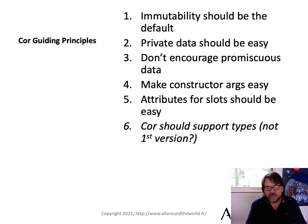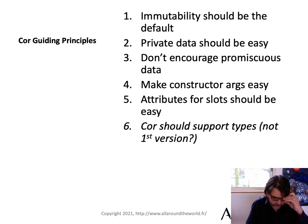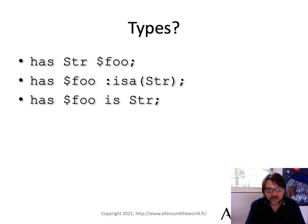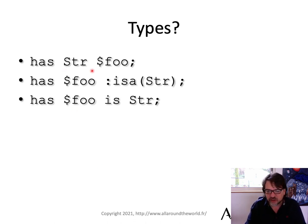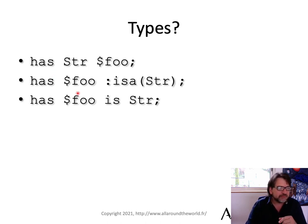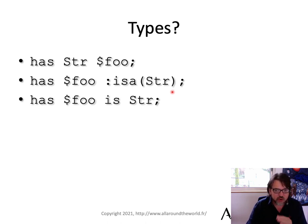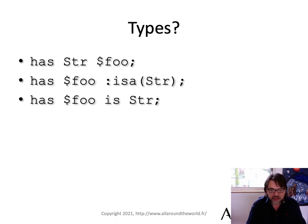Cor should support types eventually, but it's not going to in the first version — there's too much work to be done there. We have to define how the types would actually be defined: do we have 'has string foo,' which is similar to current Perl syntax? We have the colon-is syntax, which matches the attribute syntax of everything else inside of Cor and is nice and easy to extend. Some people are arguing for 'is string'; we don't know. So we're punting on that.